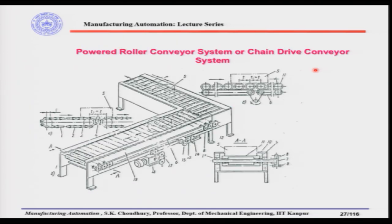Here are some examples of material transfer — for example, a powered roller conveyor system or chain drive conveyor system. Here the part is being transmitted from one place to another with the help of rollers in the conveyor, driven by motors. There is also the chain and sprocket system. These rollers move the parts from one place to another, and they are finally coming out — this includes chain drive, belt drive, and so on.